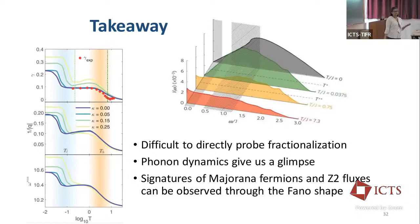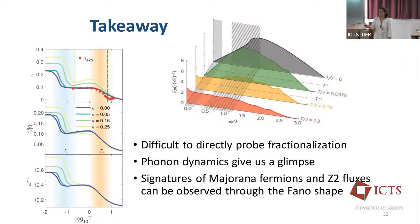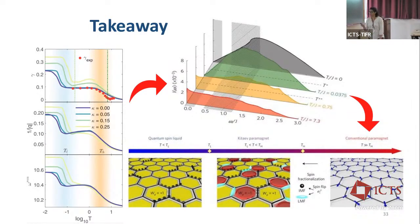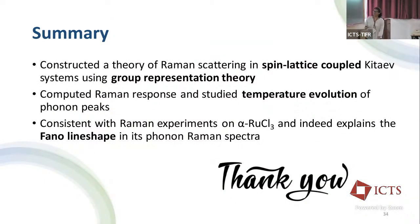What is the takeaway? It seems difficult to directly probe fractionalization, but phonon dynamics can give us a good glimpse into what is happening. The signatures of Majorana fermions and Z2 fluxes can be observed through the Fano line shape and other peak parameters. What is happening to the peak parameters with temperature is governed by the continuum, and what is happening to the continuum is a reflection of the spin liquid subsystem. Thank you for your attention.